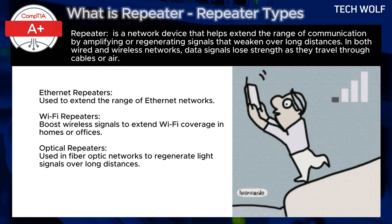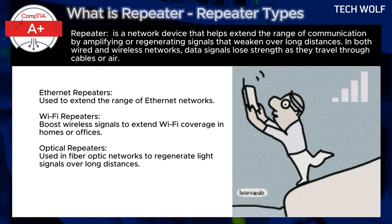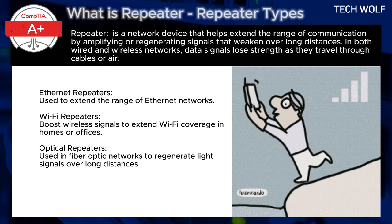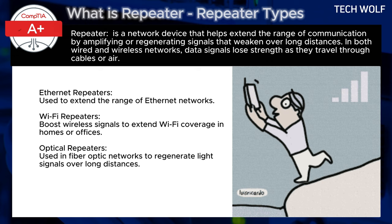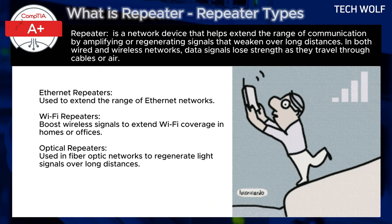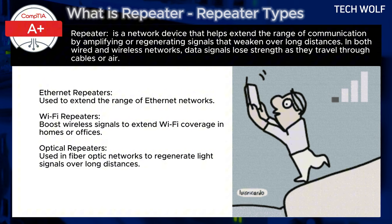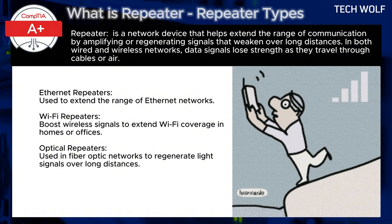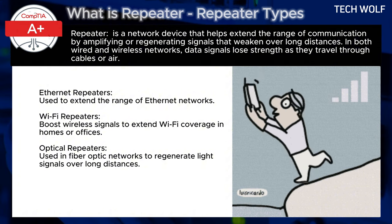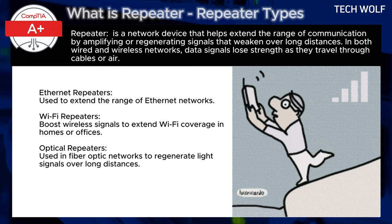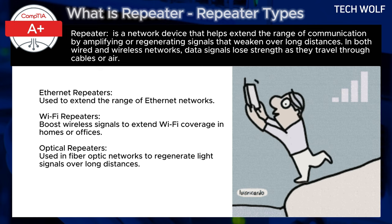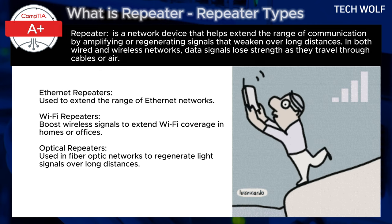To summarize, a repeater is a simple yet crucial device that amplifies and retransmits signals to extend the range of communication, ensuring reliable data transmission across long distances or large spaces. It is commonly used in both wired networks like Ethernet and wireless networks like Wi-Fi to overcome signal degradation.